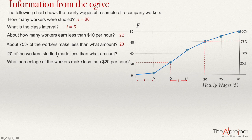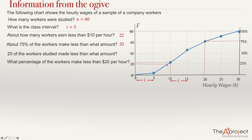The fifth question: 20 of the workers studied made less than what amount? I look for the number 20 in the cumulative frequency on the y-axis. From that number 20, I move right to the ogive to find the point, then go down to read the hourly wage. The hourly wage is approximately $9. So 20 workers studied made less than $9. This is an approximation since I cannot find the exact amount.